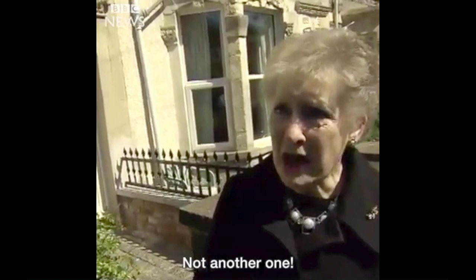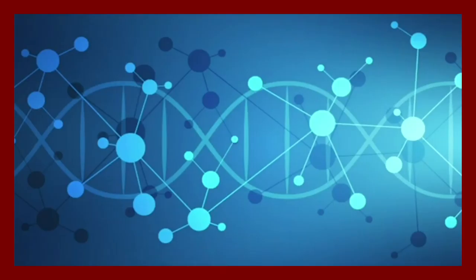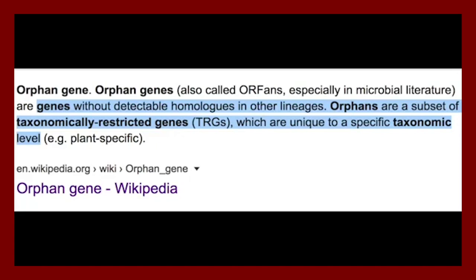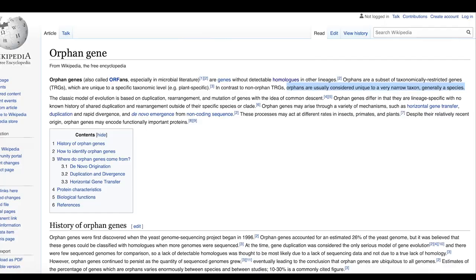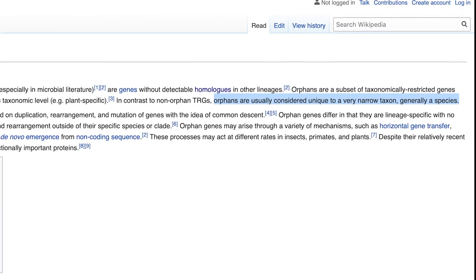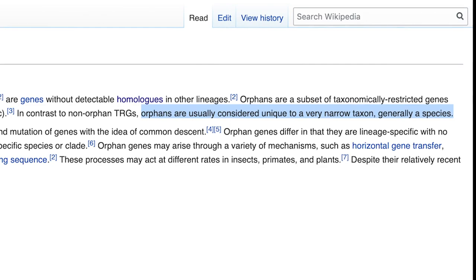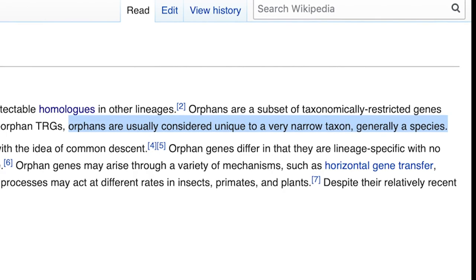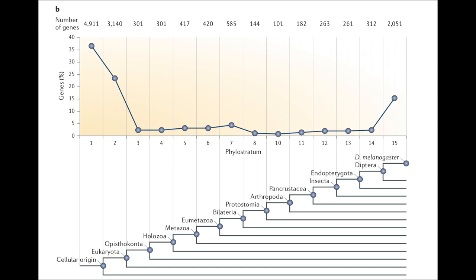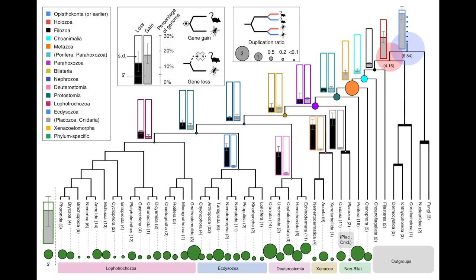After making his point about barcoding, Raw Matt mentions another line of evidence he thinks proves the existence of distinct kinds around the family level. [Raw Matt clip] Combine DNA barcoding with taxonomically restrictive orphan genes, which show which animals aligned with one another on a family level. Raw Matt claims taxonomically restricted orphan genes show some kind of family-level specific pattern, but that's not true either. The very Wikipedia article he shows on screen says, quote, 'Orphans are usually considered unique to a very narrow taxon, generally a species.' Orphan genes are generally considered unique to a single species, but there are also genus-specific genes, family-specific genes, order-specific genes, and so on — all different types of taxonomically restricted genes existing at all levels of taxonomic classification. They're not unique to the family level, or anything recognizable as the kind level, as Raw Matt seems to think.